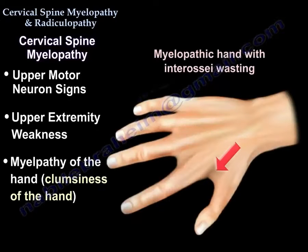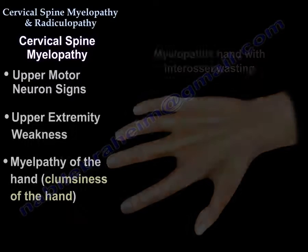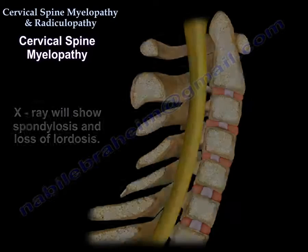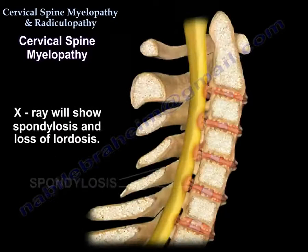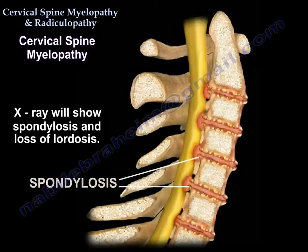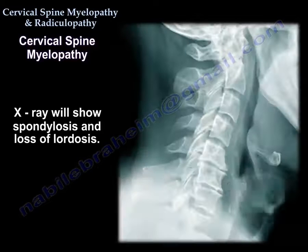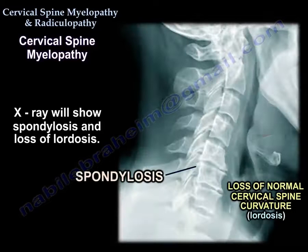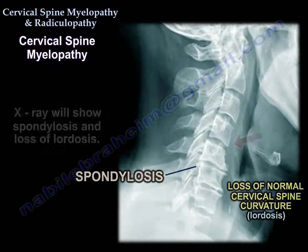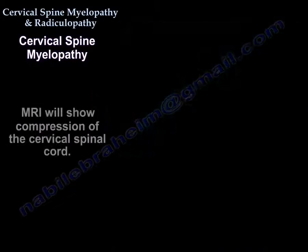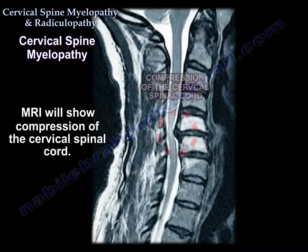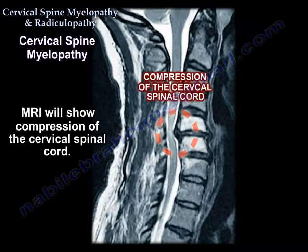The X-ray will show spondylosis and loss of lordosis. The MRI will show compression of the cervical spinal cord.